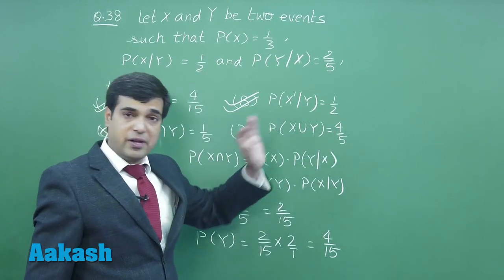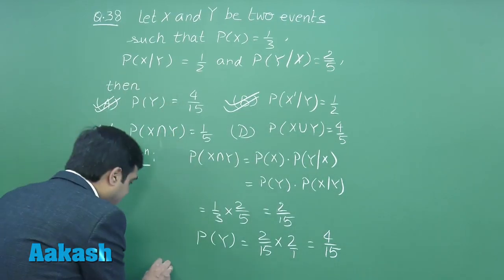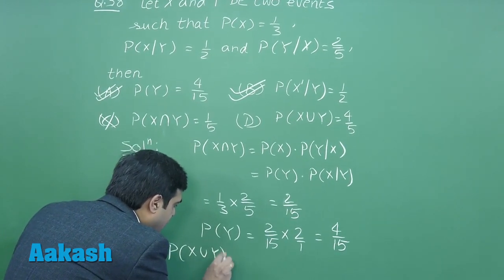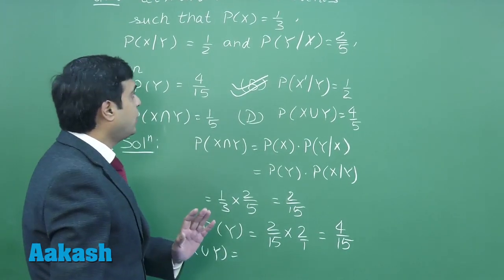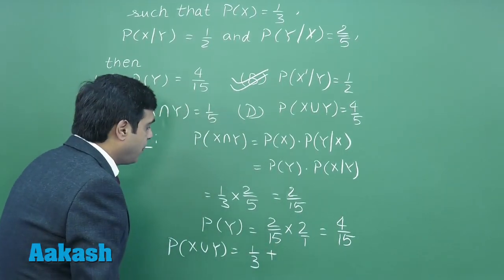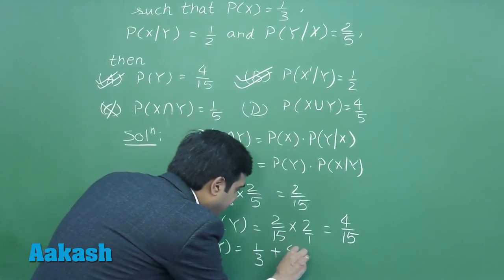Next, probability of X union Y. We have to use the formula: probability of X union Y will become probability of X, that is 1/3, plus probability of Y, that is 4/15.